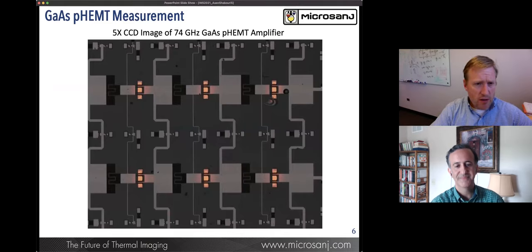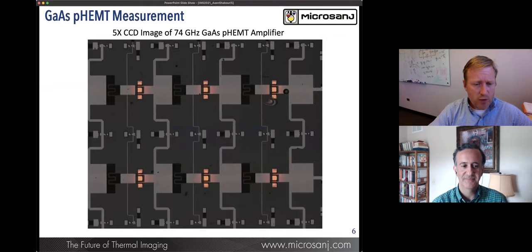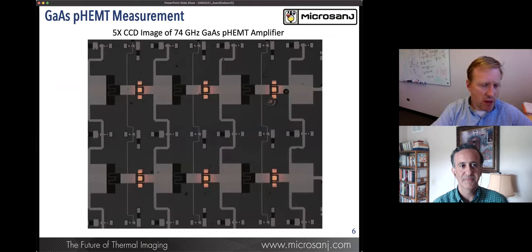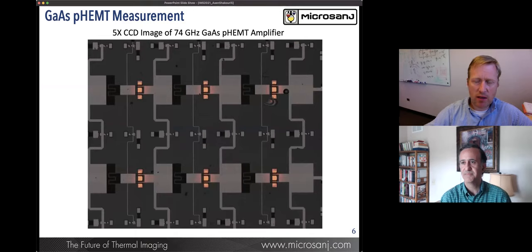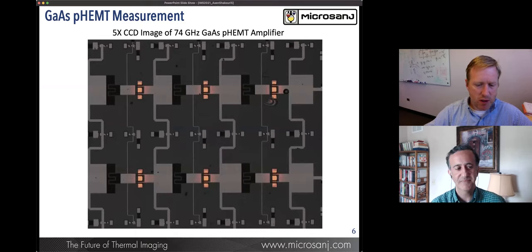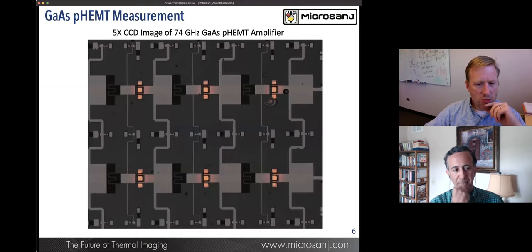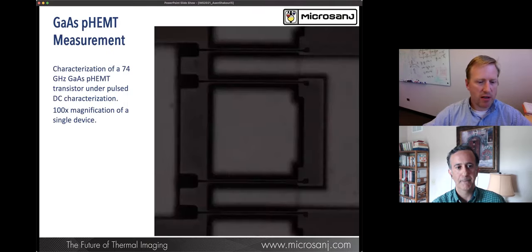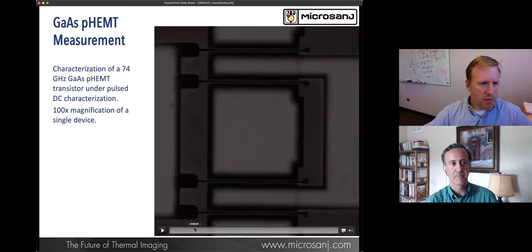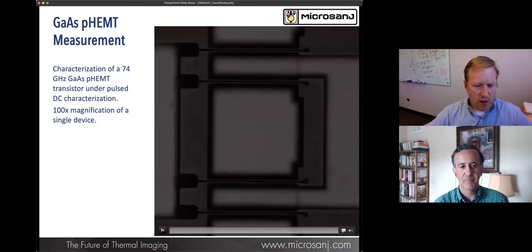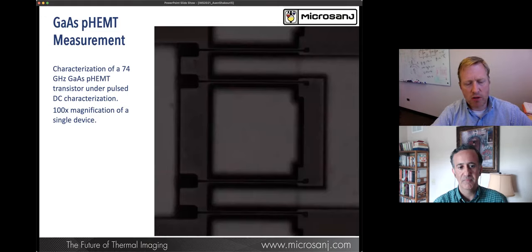This is one of those devices. This is a zoomed out view of a multi-stage 74 gigahertz GaAs pHEMT amplifier. We went ahead and biased this and then we can start to look at each one of the individual cells. With a 5x CCD image, we can now look at its pulse performance at the finger level. At 100X magnification, we can view just a few of the fingers and I'll play a movie here.